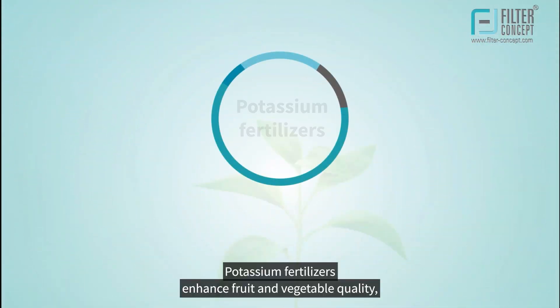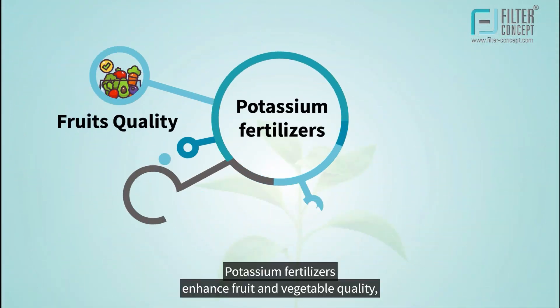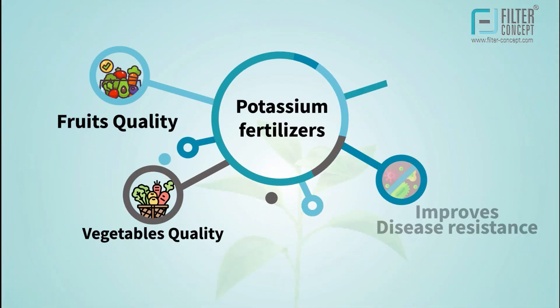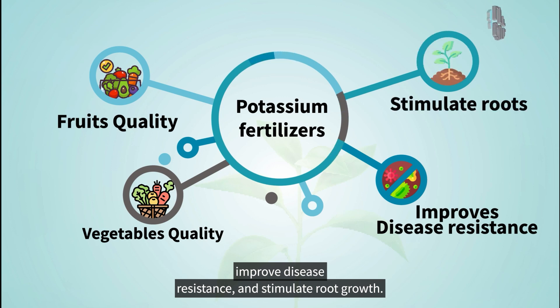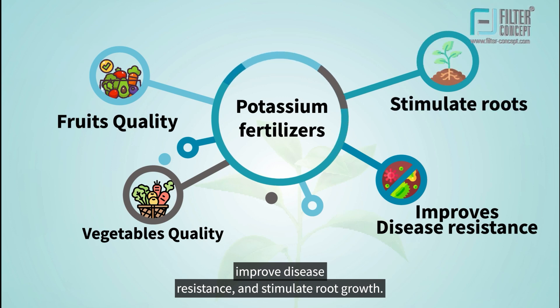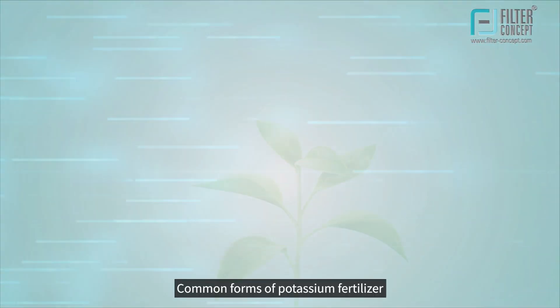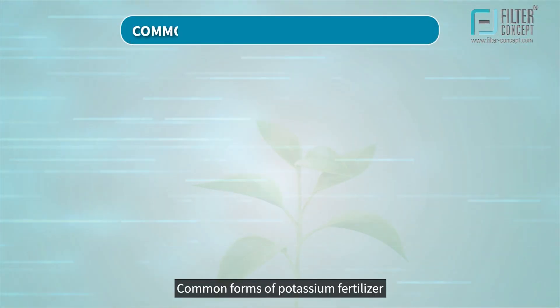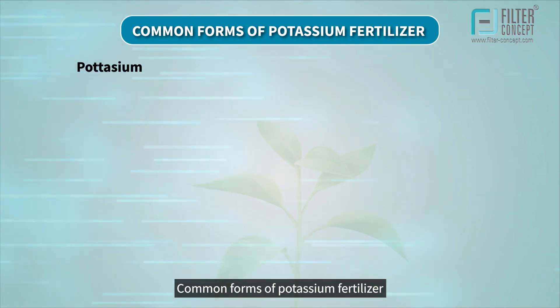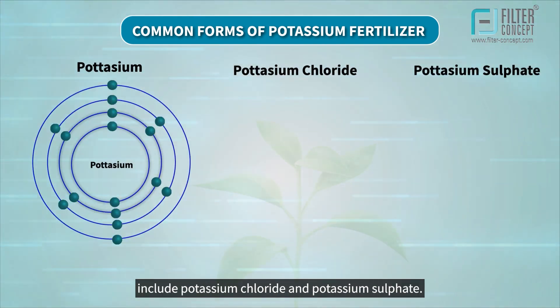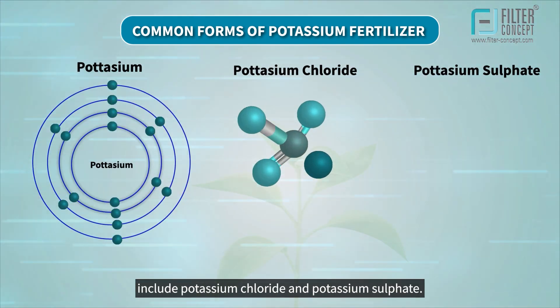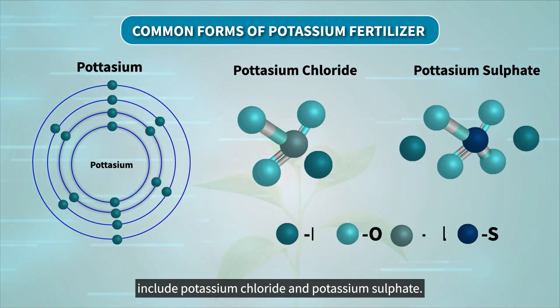Potassium fertilizers enhance fruit and vegetable quality, improve disease resistance, and stimulate root growth. Common forms of potassium fertilizer include potassium chloride and potassium sulfate.